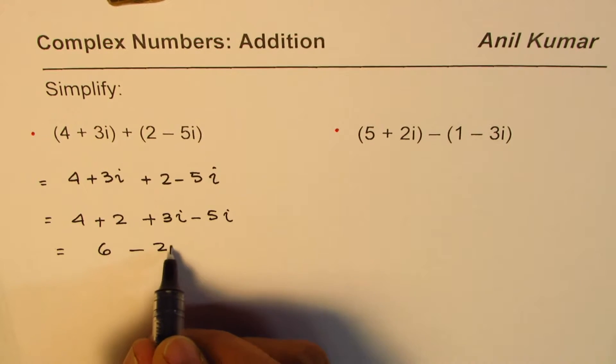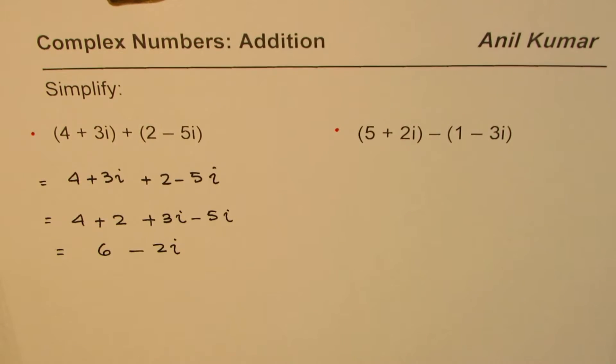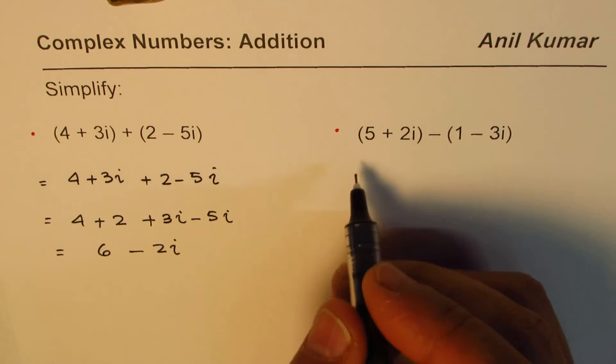So that becomes the answer for the first one: 6 - 2i. Now let's do the same operation for the second one.